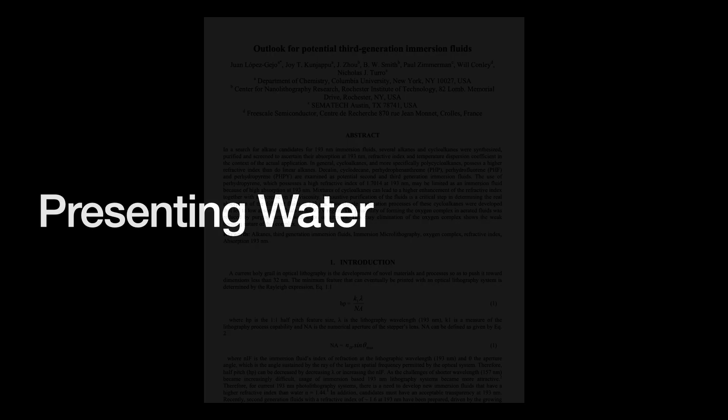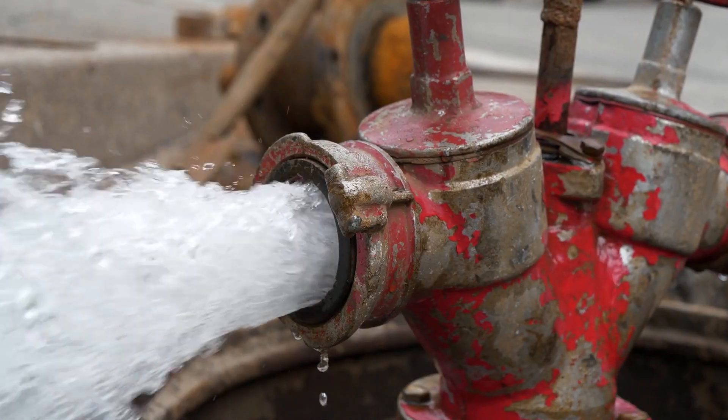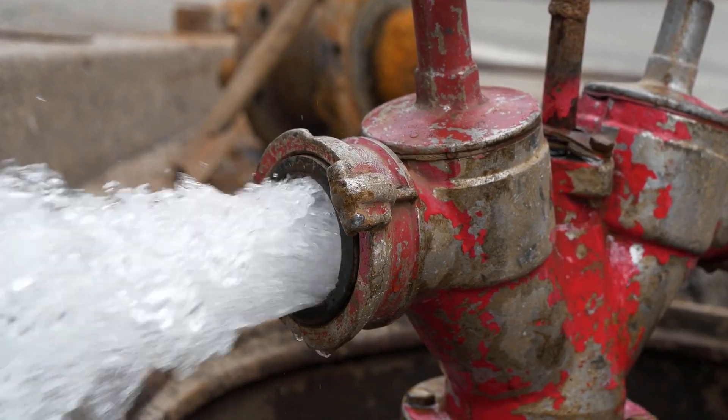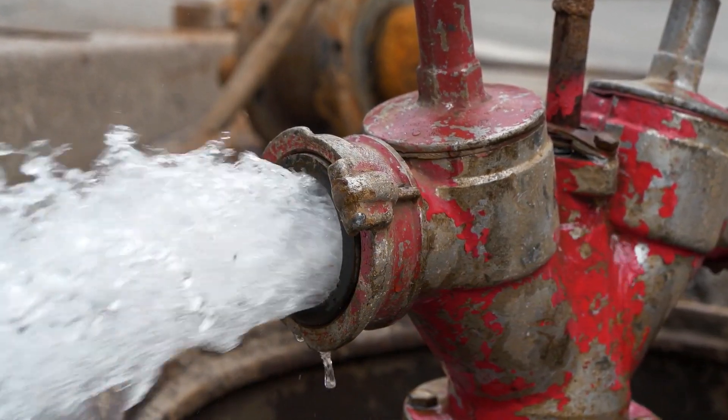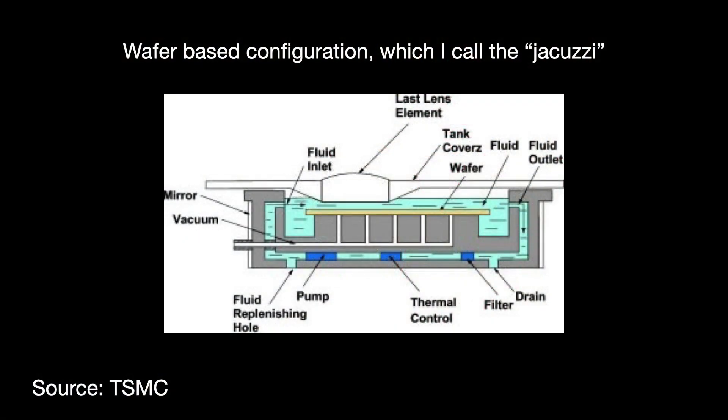Lithography makers experimented with a variety of ways to present the water in between the lens and the wafer. In order to keep the water fresh and prevent contamination on the wafer surface, the water has to be constantly moving. First, they considered a simple circulating bath, technically called the wafer-based configuration. The wafer is immersed in a circulating tank that constantly bring water over and under the wafer. Dirty water is constantly being pumped out as new ultra-pure water comes in.